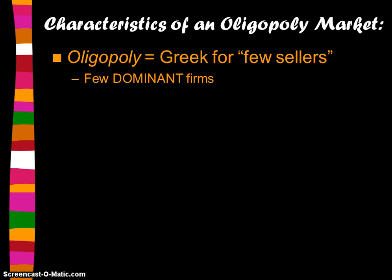There are just a few sellers that really matter, that have a lot of market power, that control the majority of sales in the industry. There may be a bunch of other producers that don't account for very many of the market sales, and therefore don't have much market power. An oligopolistic industry just has a few — say three to five or six — dominant companies that control almost all the sales.